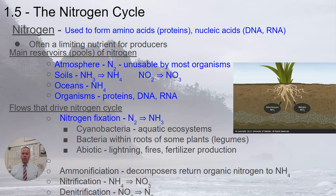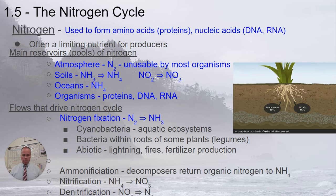One of the reasons we planted mung beans in our eco-columns is because they are a legume. They can help fix nitrogen because they have bacteria in their roots which help absorb nitrogen from the atmosphere and turn it into ammonia, which can then make its way through the soil nitrogen cycle.